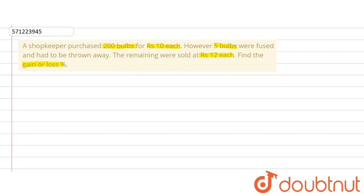First of all, we will write down the cost price of the bulbs. So cost price CP is equal to, there were 200 bulbs and each bulb costed Rs.10. So the cost price will be Rs.2000.